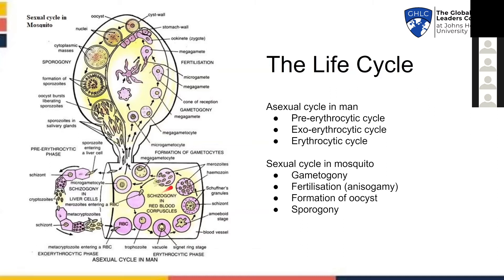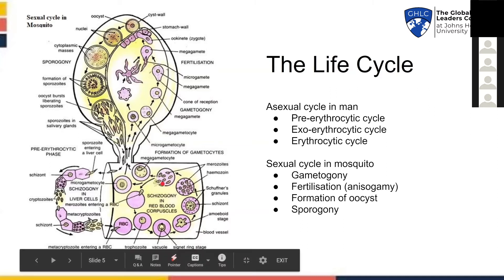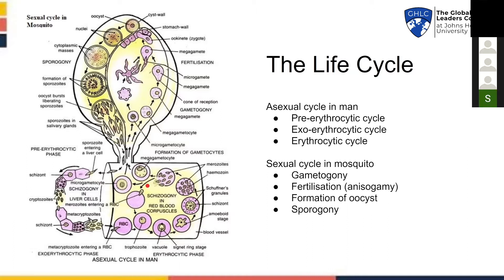The merozoites either reinfect an RBC or develop into gametocytes, which halt and do not develop into gametes because neither the blood pH nor the temperature is suitable. If a mosquito takes a blood meal at this point, the gametocytes develop into gametes that undergo fertilization to form a zygote. The zygote penetrates through the gut wall and forms a cyst called an oocyst, which undergoes further meiotic and mitotic divisions to form sporozoites that are again infectious to humans. These sporozoites burst out of the cyst and reside in the salivary glands, waiting for the mosquito to take another blood meal.